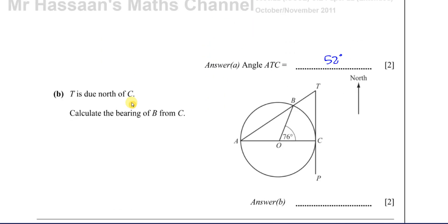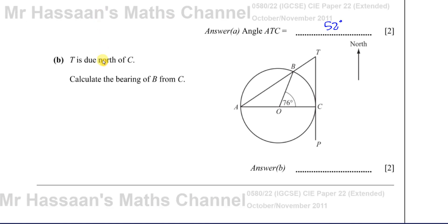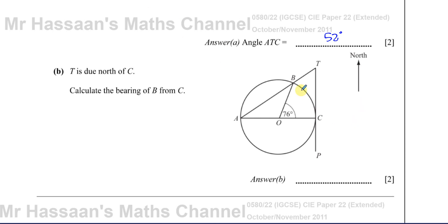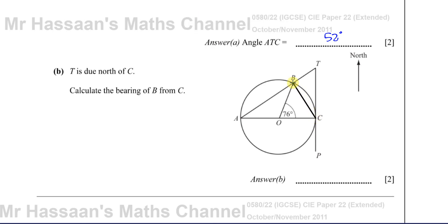Now for part B. It says T is due north of C. Calculate the bearing of B from C. So T is due north of C. So this is straight, it's like vertical, due north. Calculate the bearing of B from C. So I'm going to draw a line that connects B and C together. Because it looks like we need to do that there. So that's C and that's B. So I've drawn that line in. We want to find the bearing of B from C.